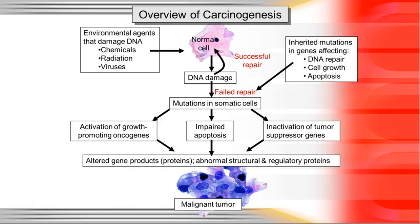So how does cancer work exactly? When we talk about the formation of cancer cells, we're talking about a process called carcinogenesis. You have two factors going into the production of these cancer cells: environmental agents — external things that cause mutations — and inherited mutations, things already in your DNA before you get exposed to anything else. There are two things that can happen when you have DNA damage: you can repair it successfully, or you don't and you have a failed repair. Inherited mutations can actually contribute to that failed repair.